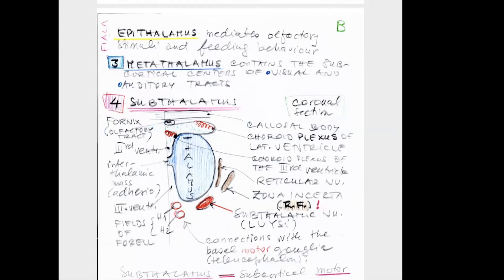The lateral ventricle lies above the thalamus and contains the choroid plexus. The choroid plexuses in all ventricles produce cerebrospinal fluid. The light blue dots indicate the choroid plexus and the cavity of the lateral ventricle. Here we also see the choroid plexus of the third ventricle, and the interthalamic mass — adhesio interthalamica — which provides stability of the thalamus and may be absent in around 25 to 30 percent of cases.